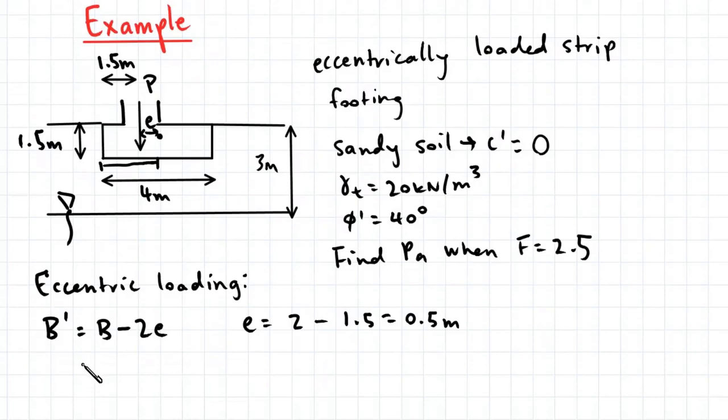Okay, so our effective width, that's the width 4 minus 2 multiplied by 0.5. So our effective width is 3 meters.